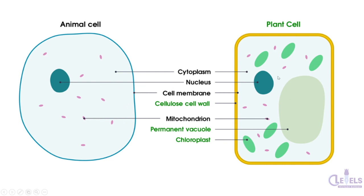The structures inside both cells include cytoplasm, which is the liquid present in both cells, and all of the organelles are suspended within this cytoplasm. You also have the nucleus, the mitochondria, the vacuole, and chloroplasts. The labels shaded green are specific to the plant cell, meaning they are not present in animal cells — the cell wall, the chloroplast, and the permanent vacuole are not present in the animal cell.